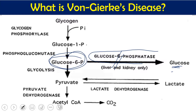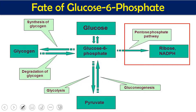So glucose will be deficient, and because of this deficiency we have the disease called Von Gierke disease, or type 1 glycogen storage disease. Now, what is the fate of the accumulated glucose-6-phosphate? As mentioned, it can be converted to glucose by glucose-6-phosphatase — which is absent in Von Gierke disease. It can also directly enter glycolysis and be metabolized to give pyruvic acid or acetyl coenzyme A.